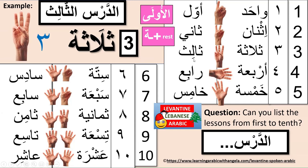تالت means the third — from تلتة, تلتية in the feminine. أربع becomes رابع, and in the feminine رابعة — we add the feminine تة. خمسة becomes خامس, خامسة in the feminine. ستة becomes سادس, سادسة in the feminine. سبعة becomes سابع, سابعة. تمانية becomes تامن, تامنة. تسعة becomes تاسع, and عشرة becomes عاشر.